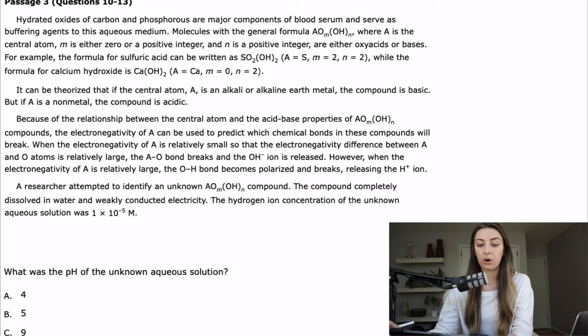It says hydrated oxides of carbon and phosphorus are major components of blood serum and serve as buffering agents to this aqueous medium. A desperate grasp at trying to make this related to physiology. Molecules with the general formula A O sub m O H sub n where A is the central atom, m is either zero or a positive integer and n is a positive integer, are either oxy acids or bases. For example, the formula for sulfuric acid can be written as SO2(OH)2 where A is S, m is 2, and n is 2, while the formula for calcium hydroxide is Ca(OH)2 where A is calcium, m is 0, n is 2.